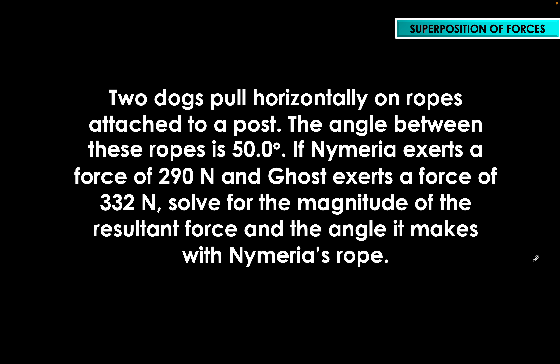For the sample problem, we have two dogs pulling horizontally on ropes attached to a post. The angle between these ropes is 50 degrees. Nymeria, the first dog, exerts a force of 290 Newtons, and Ghost exerts a force of 332 Newtons. We need to solve for the magnitude of the resultant force and the angle it makes with Nymeria's rope.